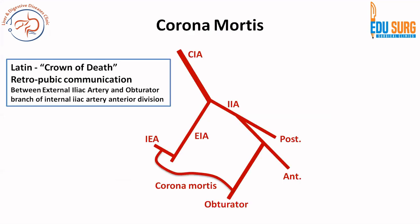Another very important question commonly asked is corona mortis. What is corona mortis? It is Latin for 'crown of death.' The common iliac artery has two branches: the external iliac artery and the internal iliac artery. The internal iliac artery divides into anterior and posterior divisions, and the anterior branch gives rise to the obturator artery. We will see the internal iliac artery in a separate video, but for corona mortis you need to understand how the crown is formed.